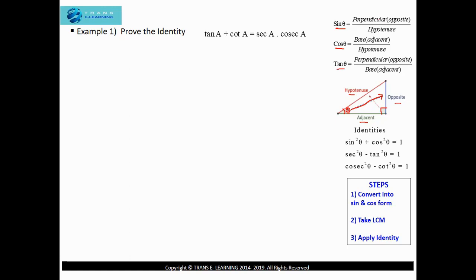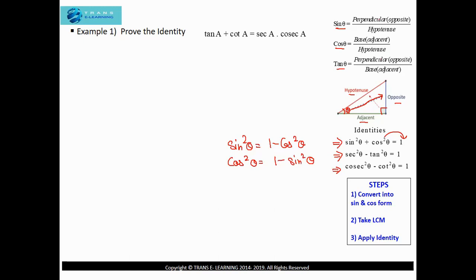As far as the identities are concerned, we will be using three identities to solve various problems. The first identity is sin²θ + cos²θ = 1. The second is sec²θ − tan²θ = 1. And the third is cosec²θ − cos²θ = 1. In case you need to find the value of sin²θ, you can always write it as 1 − cos²θ. Similarly, if you need to find the value of cos²θ, you can write it as 1 − sin²θ. If you have sin²θ + cos²θ together, you can write that as 1.